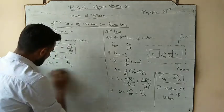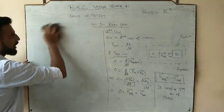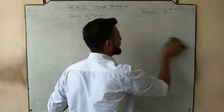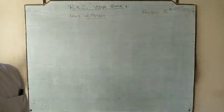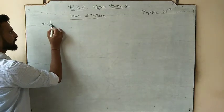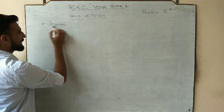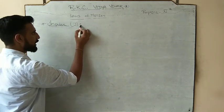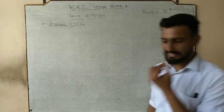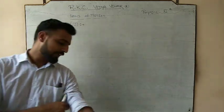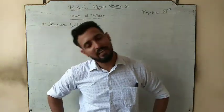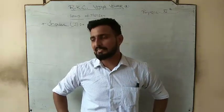Since we verified the second law as the real law, and we have covered all three laws, we will now learn applications using these laws. But before that, I want to cover one more topic from laws of motion — and that topic is impulse. Impulse is a small topic that won't take much time — about 10 to 15 minutes. After covering it, we'll solve different variety questions using Newton's laws.